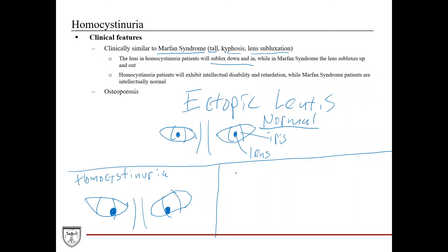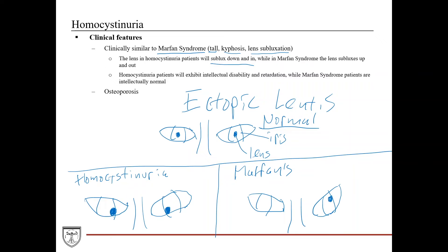In Marfan syndrome, by contrast, the lens subluxes up and out — superiorly and temporally. So this is one subtle way you can differentiate these two conditions.